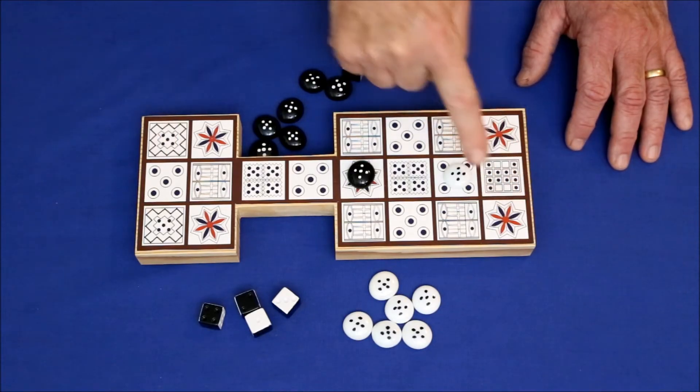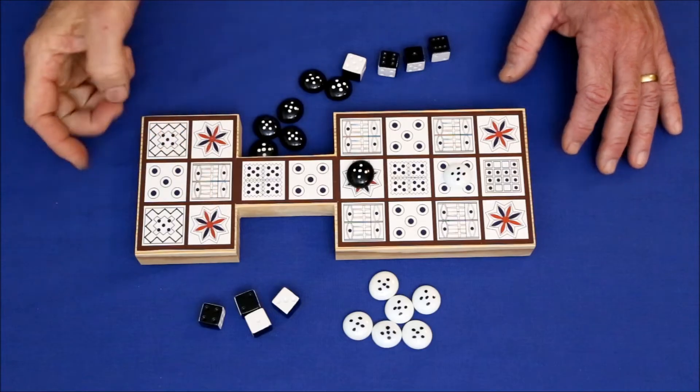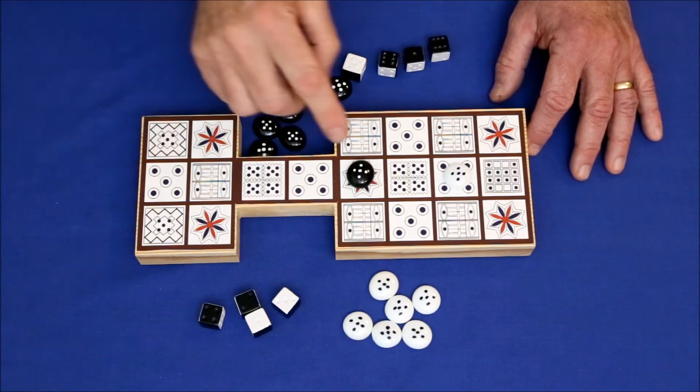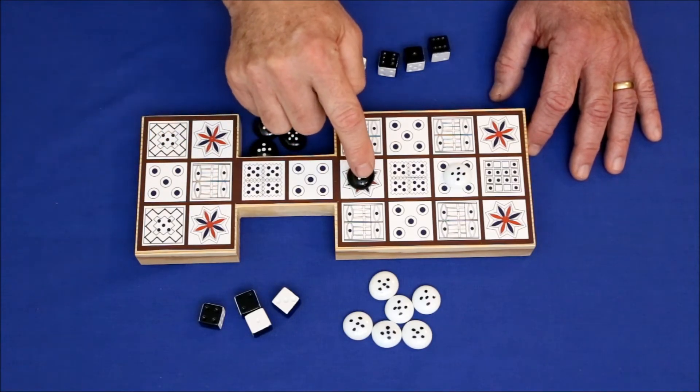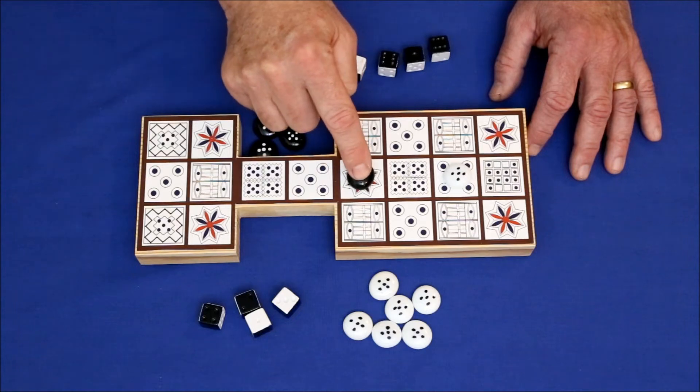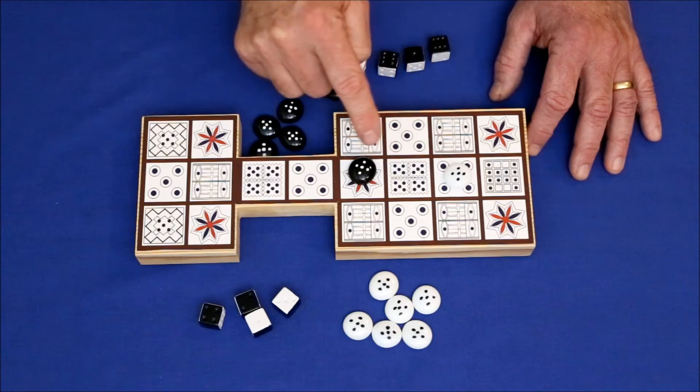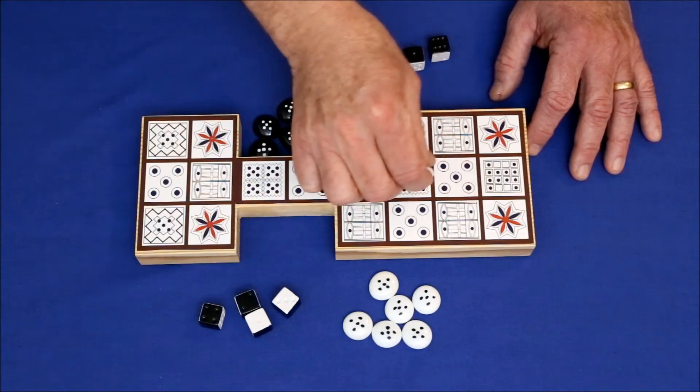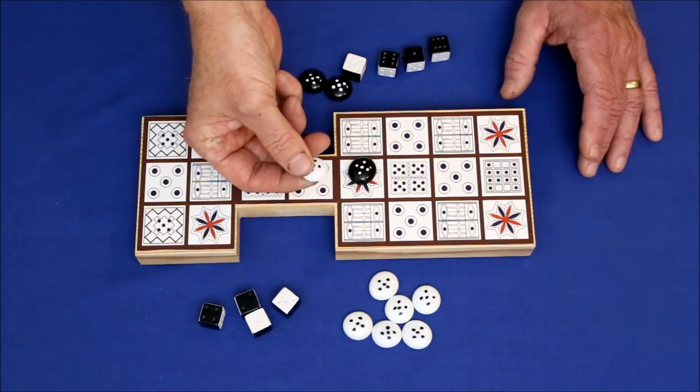Landing on a square with one of these red and blue flowers awards you an extra turn. This square is particularly important because it's a safe square. A player cannot knock you off of this square, even if he lands. For example, he threw a two, one, two, he can't knock you off.